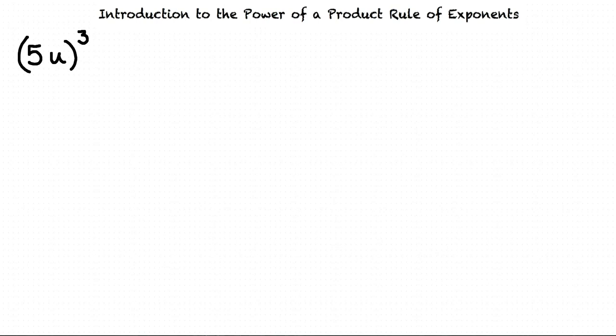When a number and a variable are directly next to each other, we assume that they are multiplied together. In this case, 5 and u are multiplied, and then the product, indicated by the parentheses around them, is raised to the third power.